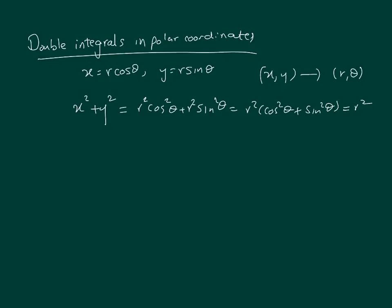Of course, theta goes for a full circle — for instance, theta goes between 0 and 2π. So if theta is between 0 and 2π and we're looking at the circle x squared plus y squared equals 4, which is a circle with radius 2, then r is between 0 and 2.